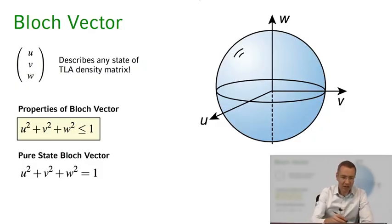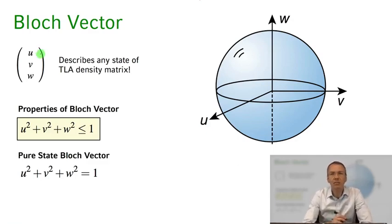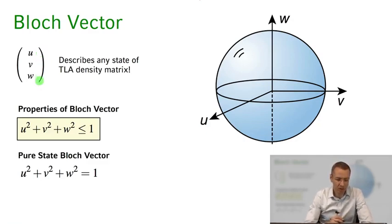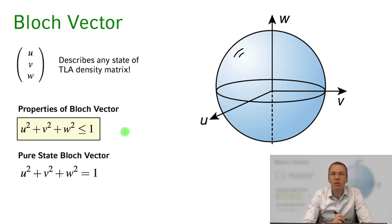Remember, in the last class we found that we can describe any state of our two-level atom, any density matrix, in terms of three real components u, v, and w that make up our Bloch vector. They are constrained to lie within a unit sphere, and if the radius of this Bloch vector is one it's a pure state; if the radius is smaller than one we're in a mixed state.